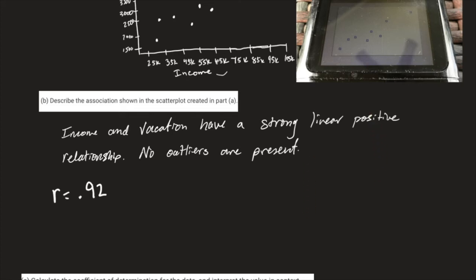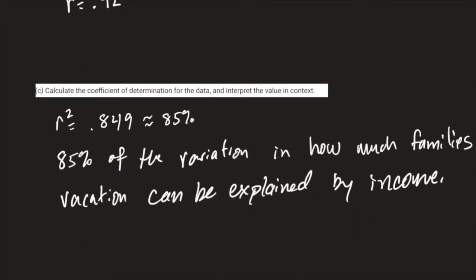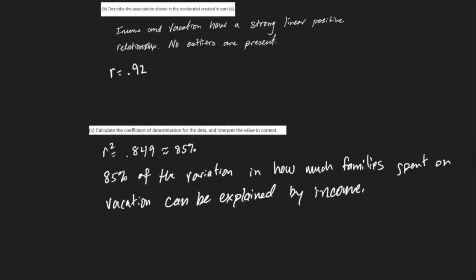The next part says to calculate the coefficient of determination for the data and interpret the value in context. That's R-squared — get used to that name. R-squared is 0.849, which rounds to about 85%. The interpretation we memorized is: 85% of the variation in how much families spend on vacation can be explained by their income. To get credit you had to give the correct value for R-squared, give a correct interpretation, and put it in context — that's where I added the bit about income and family spending on vacation.